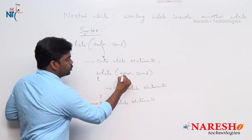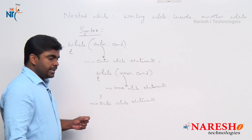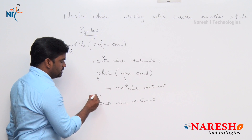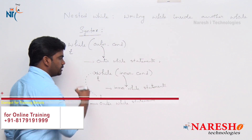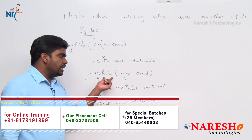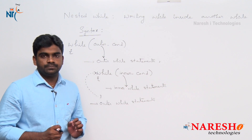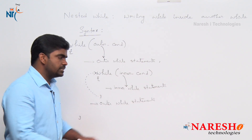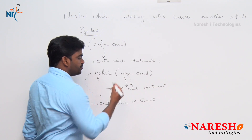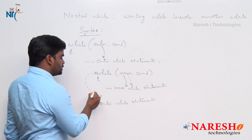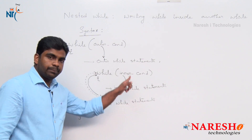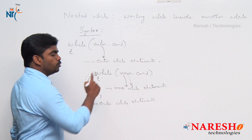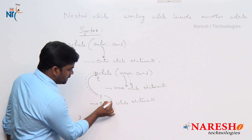If inner condition is also true, the control moves inside and it will execute inner while loop statements. After execution of inner while loop statements, it will check inner while loop condition again, because it is a loop. As long as the condition is true, it will repeat here only. Suppose if inner while loop condition fails, then the control comes out of the inner while loop.